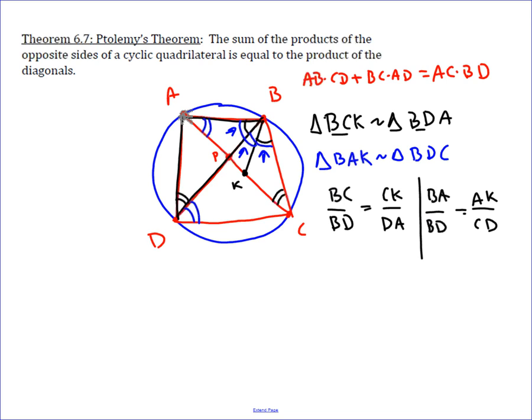Multiply by cross multiplication. You get AD times BC equals BD times CK, and then BA times CD is equal to BD times AK.